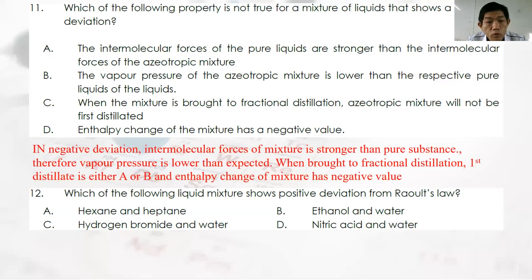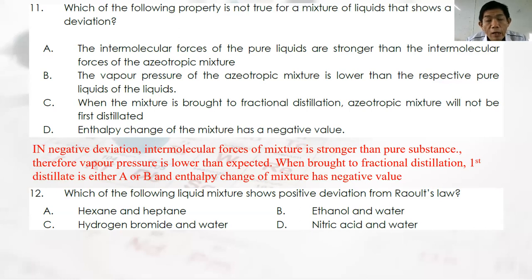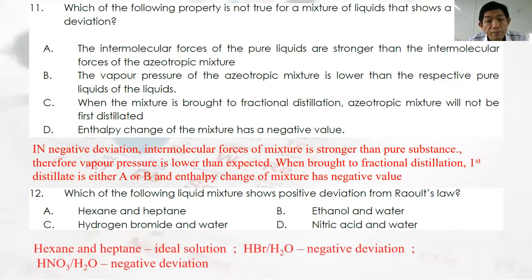Question 12: Which liquid mixture shows a positive deviation from Raoult's Law? As previously mentioned, alcohol and water mixtures typically give a positive deviation. Answer: B.